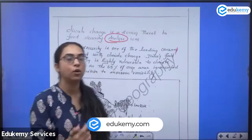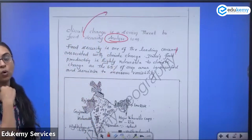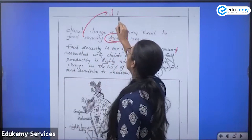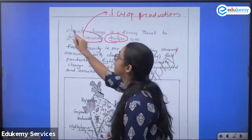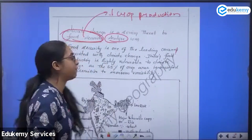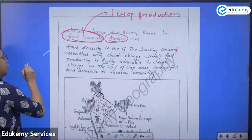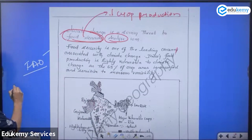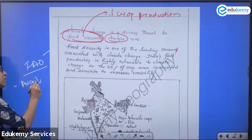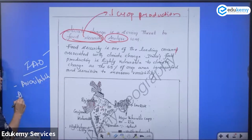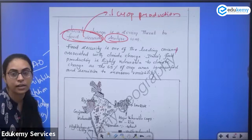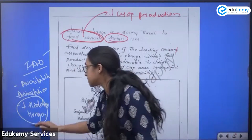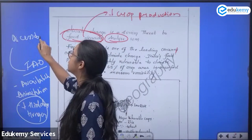Don't simply write 'it will reduce crop production' and restrict your answer to that. What is food security? If you have seen the FAO definition, food security is about the availability of food, the assimilation capacity, reducing hidden hunger, accessibility, and affordability.